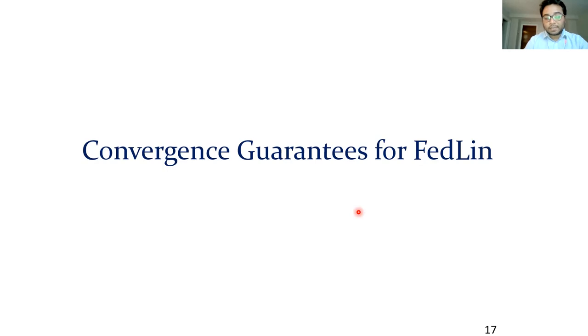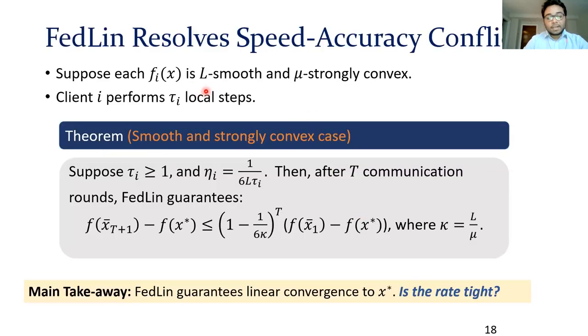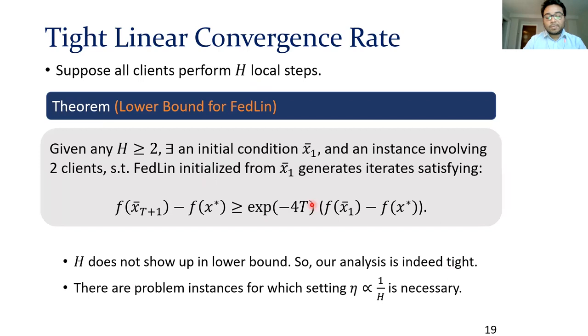Now let's come to the convergence guarantees for FedLIN. Suppose each loss function is smooth and strongly convex. What we can prove is that as long as each client performs at least one local step, FedLIN guarantees exact linear convergence to the true minimizer. At first glance, this looks really nice. But if you look closely, note that the number of local steps don't show up in the rate of the exponent. So then we can ask whether this rate is tight. What we can prove is that indeed we have a match. There are instances for which we can prove a matching lower bound, where once again, the number of local steps don't show up in the exponent. So our analysis is tight, and there are in fact problem instances where having a step size that scales inversely with the number of local steps is necessary.